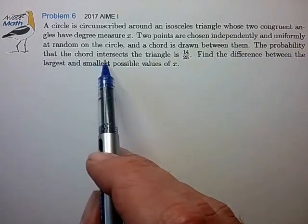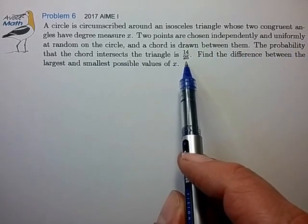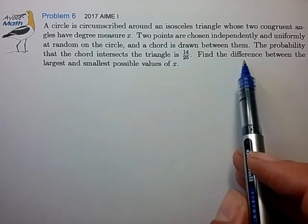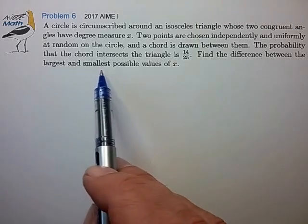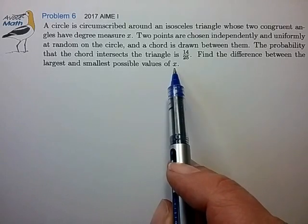The probability that the chord intersects the triangle is 14 over 25. Find the difference between the largest and smallest possible values of X.